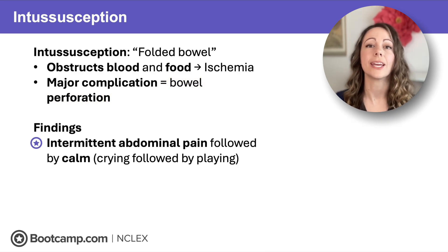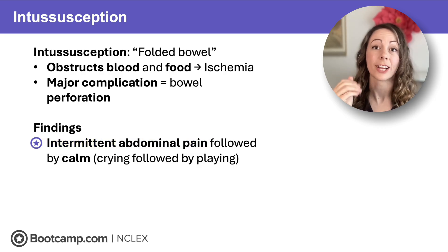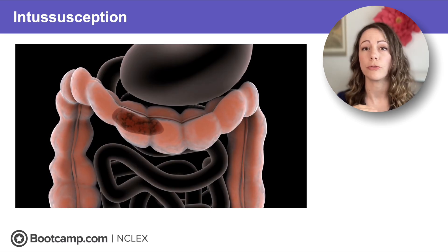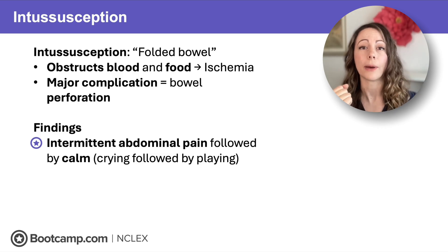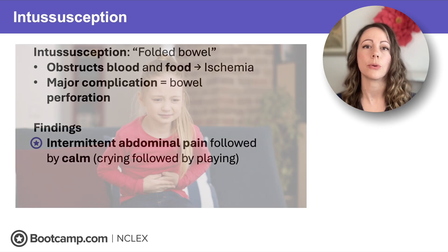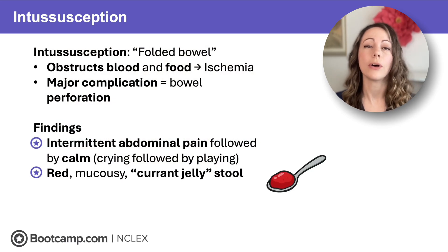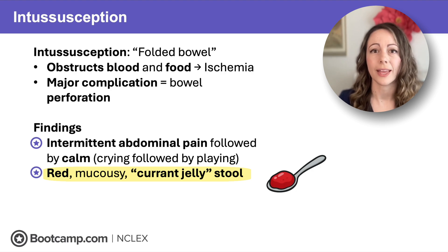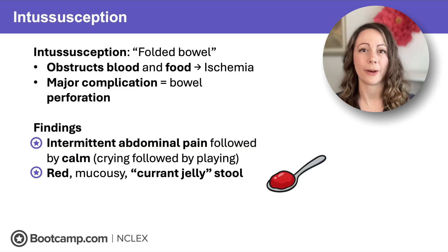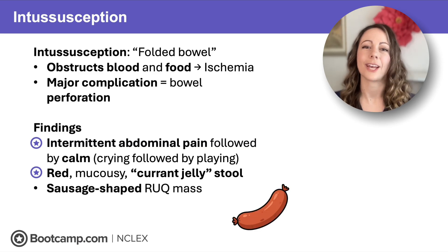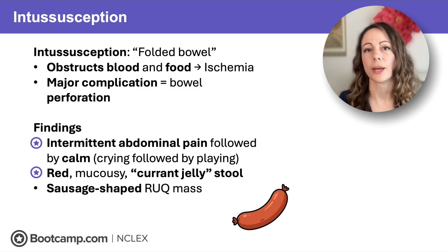What do we see in these clients? Intermittent abdominal pain followed by calm — because when there's peristalsis, the contraction of the bowel causes pain over that folded segment, and when the bowel relaxes, the pain releases. So one minute they'll be curled up and crying, the next relaxed and playing. We'll also see red mucusy currant jelly stool from blood and mucus leaking into that folded bowel, and a sausage-shaped right upper quadrant mass.